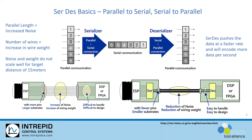SERDES technology is bi-directional. In the forward direction, called the forward channel, is a high bandwidth uncompressed data flow, while in the reverse direction, called the back channel, slower communications are possible.